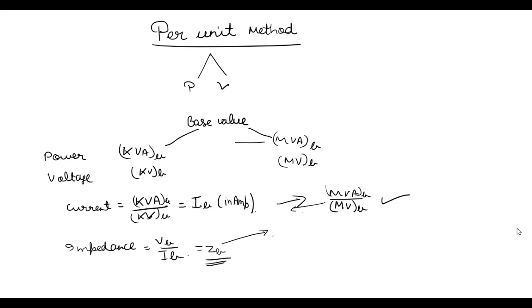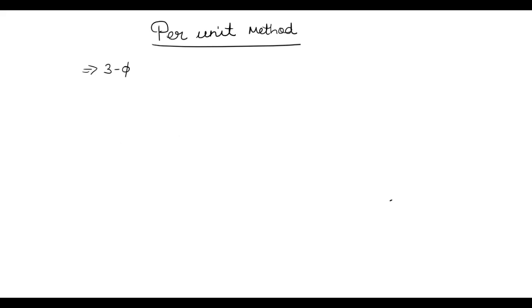One thing to remember here is that ZB, the base value of impedance, is a phase quantity. So only phase values are taken for its calculation, meaning phase voltage and phase current are used. For better understanding, let us consider a three-phase system. Our system is generally star connected, so we are taking the star-connected option, and the voltage given is usually line voltage, not phase voltage.